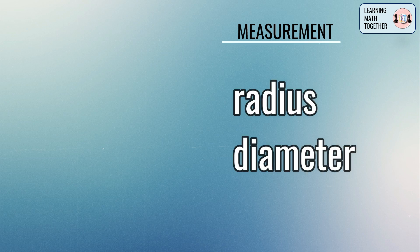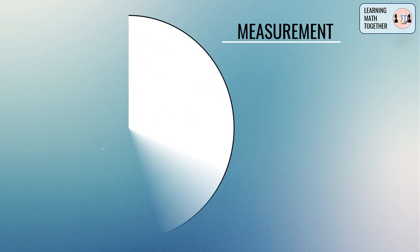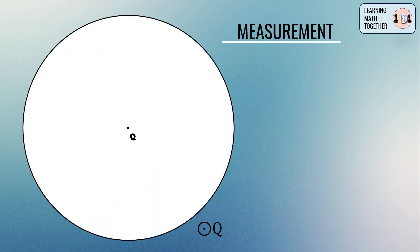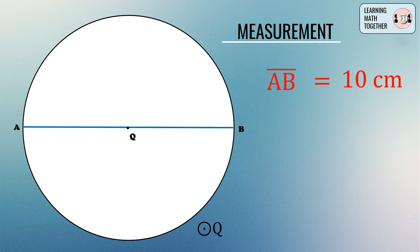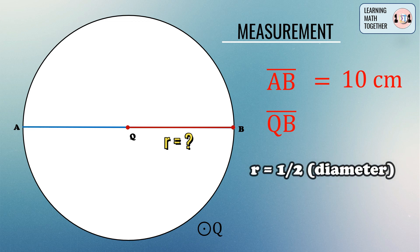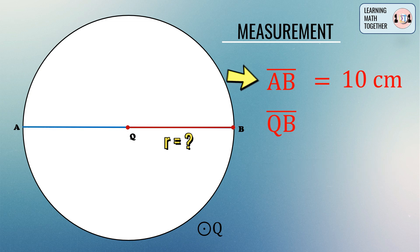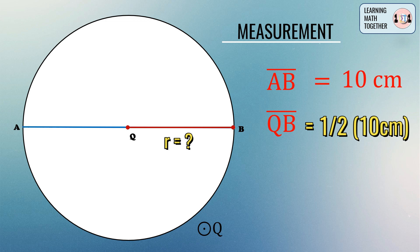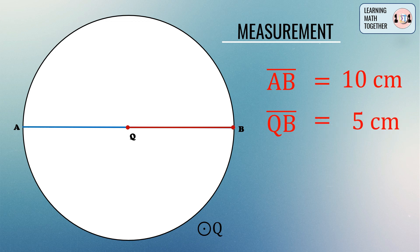We will now find the measurement of the radius and the diameter. For example, we have circle Q and diameter line segment AB given to be 10 centimeters. Our task is to find the radius, which is line segment QB. The measurement of the radius is just half the measurement of the diameter. So if line segment AB equals 10 centimeters, therefore line segment QB equals 5 centimeters.